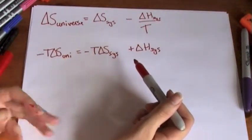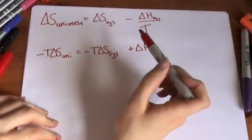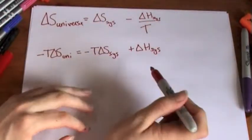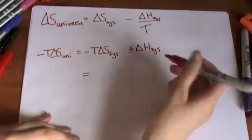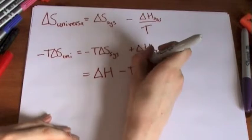Now we can figure out the system because obviously we're talking about a system, we're never going to be talking about the surroundings of something, everything's always in terms of our system. But this way we can have the change in entropy of the universe all in terms of our chemical system.